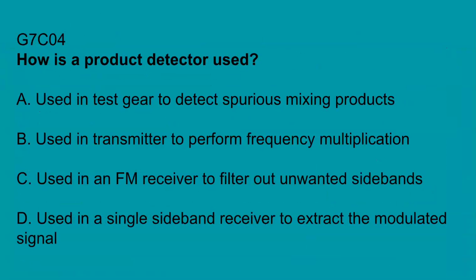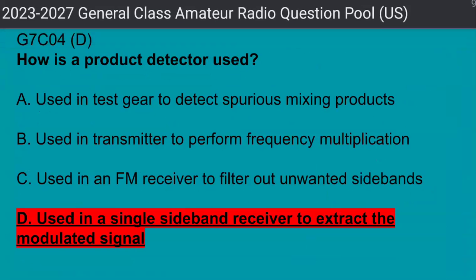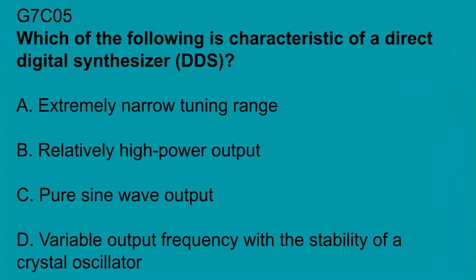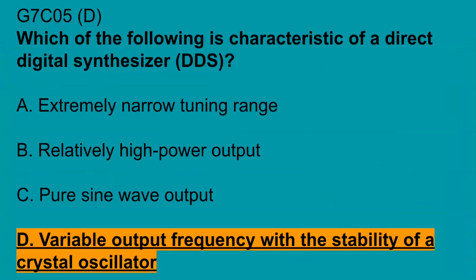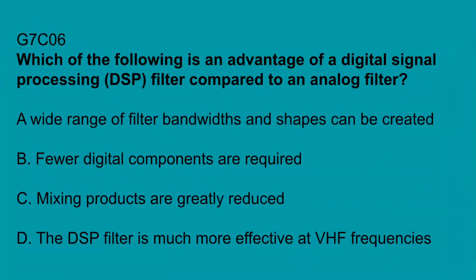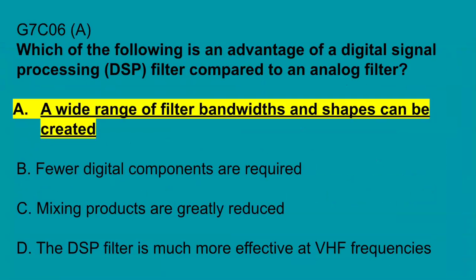G7C04, how is a product detector used? Used in a single sideband receiver to extract the modulated signal. G7C05, which of the following is characteristic of a direct digital synthesizer? Variable output frequency with the stability of a crystal oscillator. G7C06, which of the following is an advantage of a digital signal processing filter compared to an analog filter? A wide range of filter bandwidths and shapes can be created.